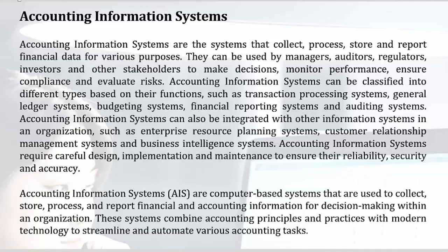Accounting information systems can be classified into different types based on their functions, such as transaction processing systems, general ledger systems, budgeting systems, financial reporting systems, and auditing systems.